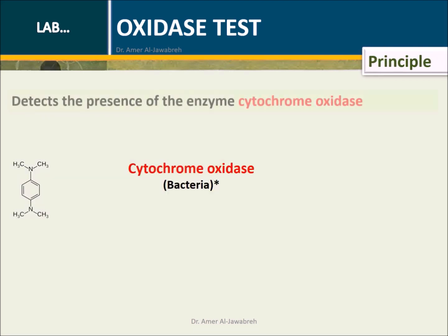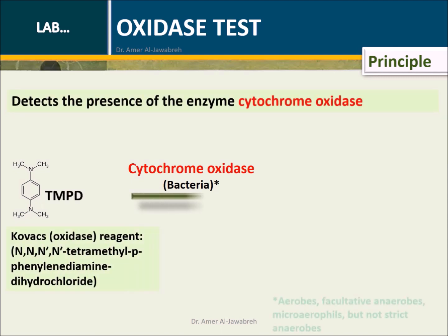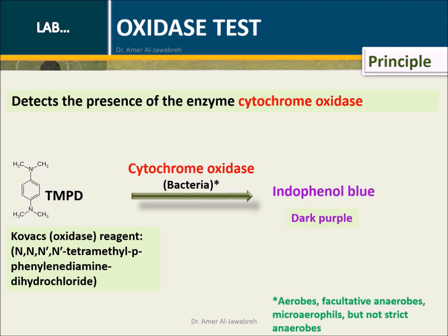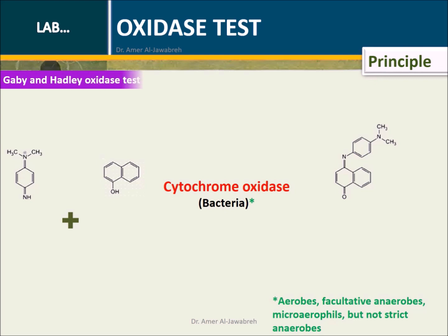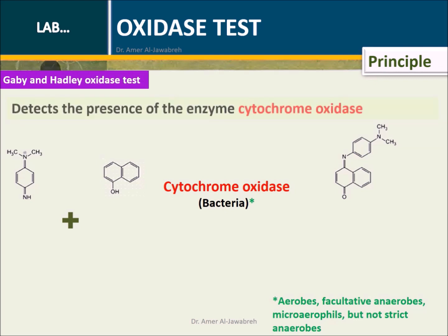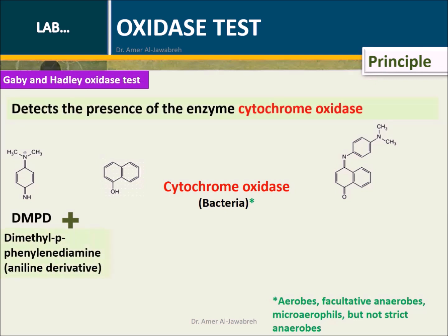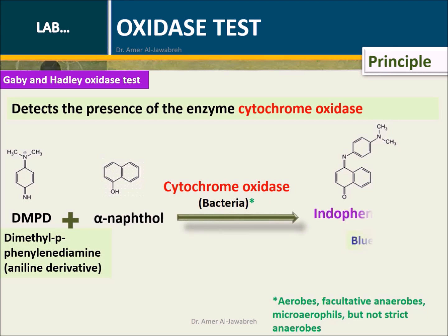Principle: Detects the presence of the enzyme cytochrome oxidase. In bacteria, cytochrome oxidase converts the Kovacs oxidase reagent TMPD, tetramethylparaphenylenediamine dihydrochloride, into dark purple indophenol blue. In the Gaby-Hadley test, cytochrome oxidase converts DMPD, dimethylparaphenylenediamine, an aniline derivative, in the presence of alpha-naphthol into indophenol blue.